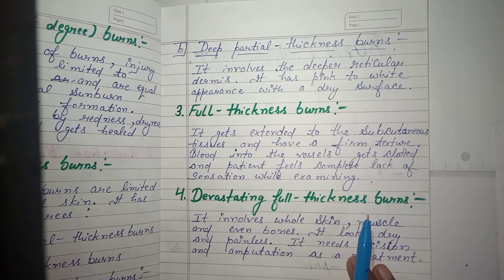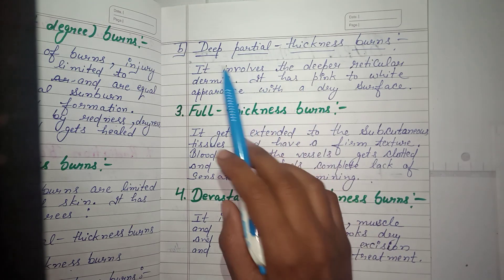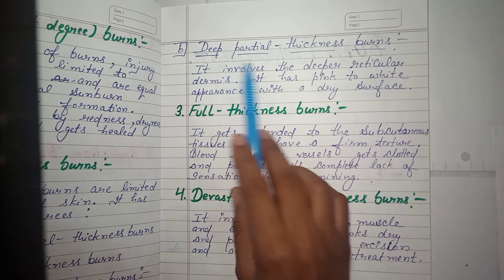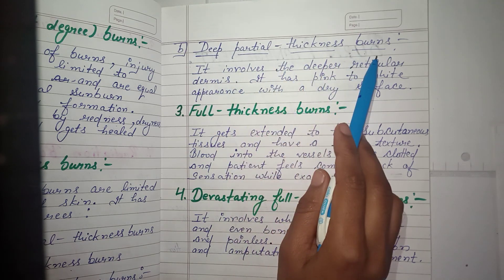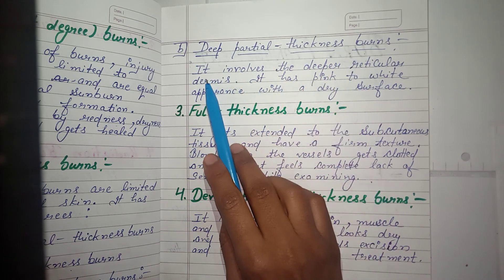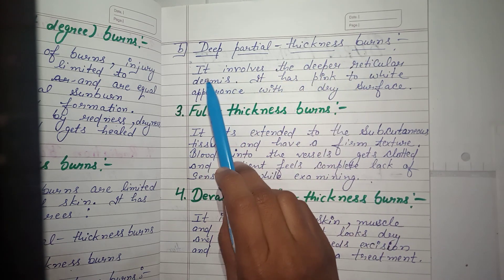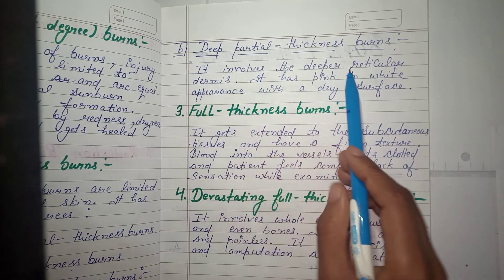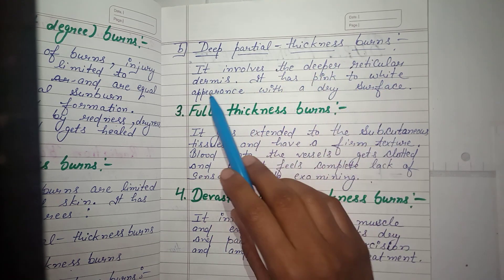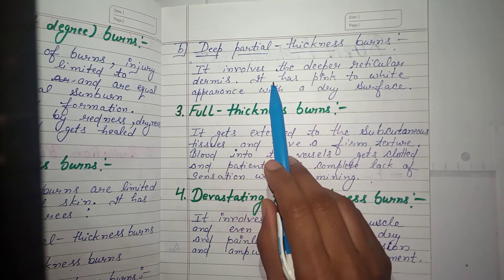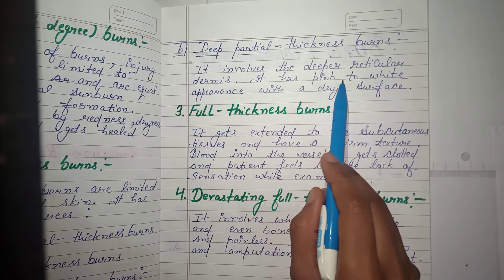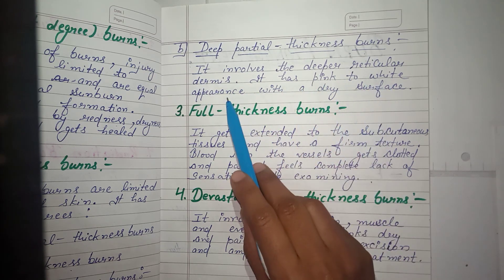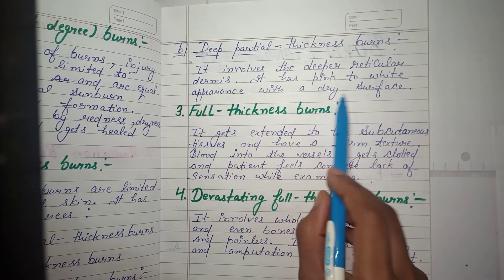Deep partial thickness burn involves the deeper reticular dermis. It has a pink to white appearance with a dry surface.